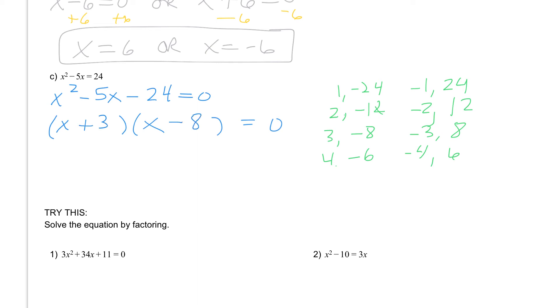You always want to check your factors to make sure that they work. You could FOIL this all out to make sure that you get this to start with. Once you have your factors, now we can set them equal to 0. We're going to take x + 3 and set that equal to 0, or x - 8 and set that equal to 0.